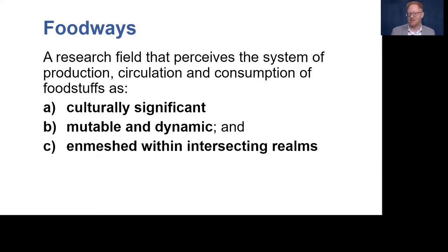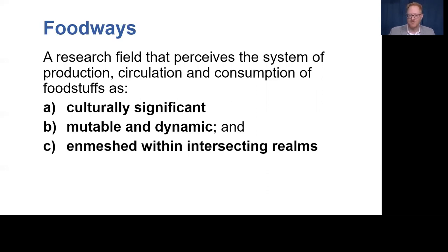A related approach takes dried fish as part of foodways — systems of culturally significant practices through which identity is negotiated through local foods, such as fermented fish in Thailand or smoked tuna in Indonesia. On this slide we have a definition of foodways from Hayward and Moss as a research field that perceives the system of production, circulation, and consumption of foodstuffs as: (a) culturally significant for the individuals and communities involved, (b) mutable and dynamic, and (c) enmeshed within intersecting realms including economics, politics, culture, religion, etc.